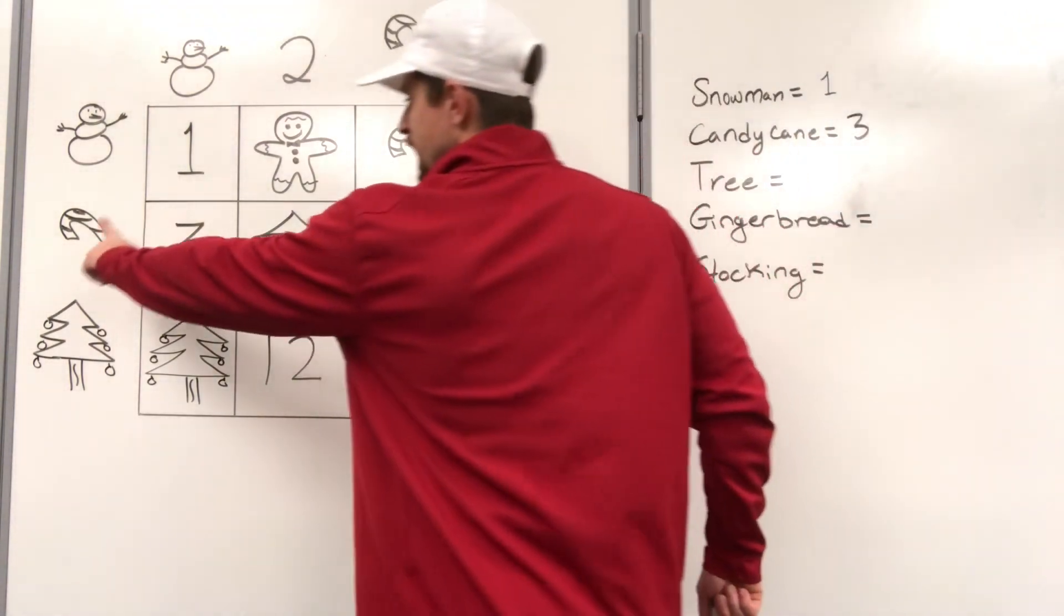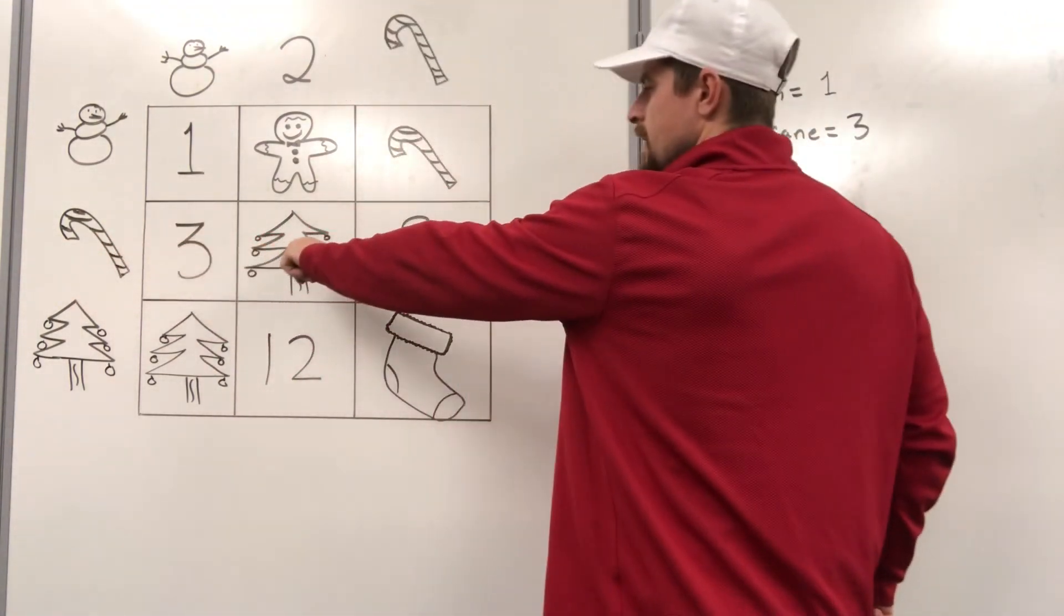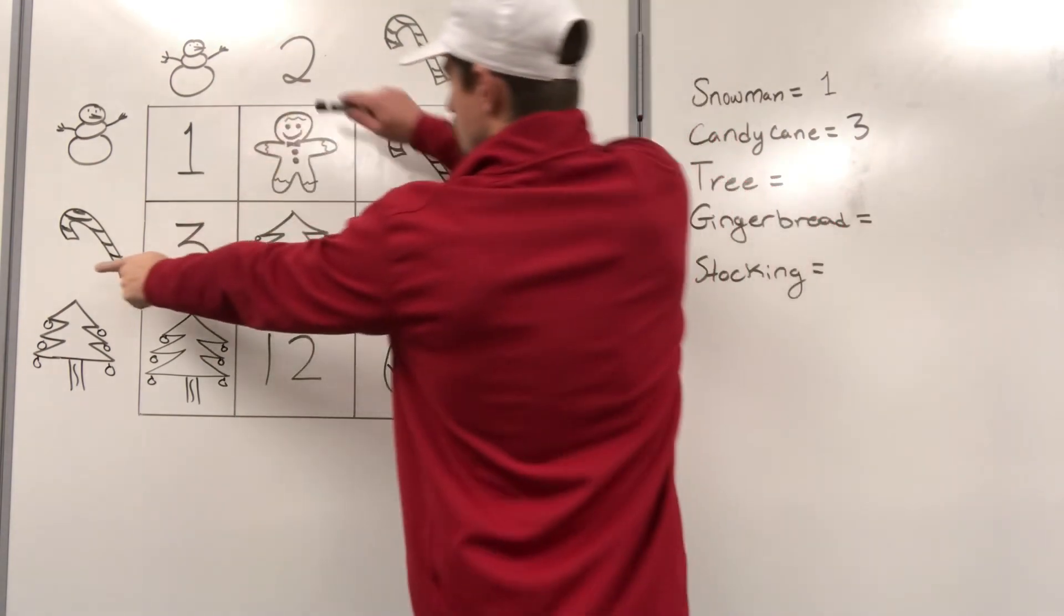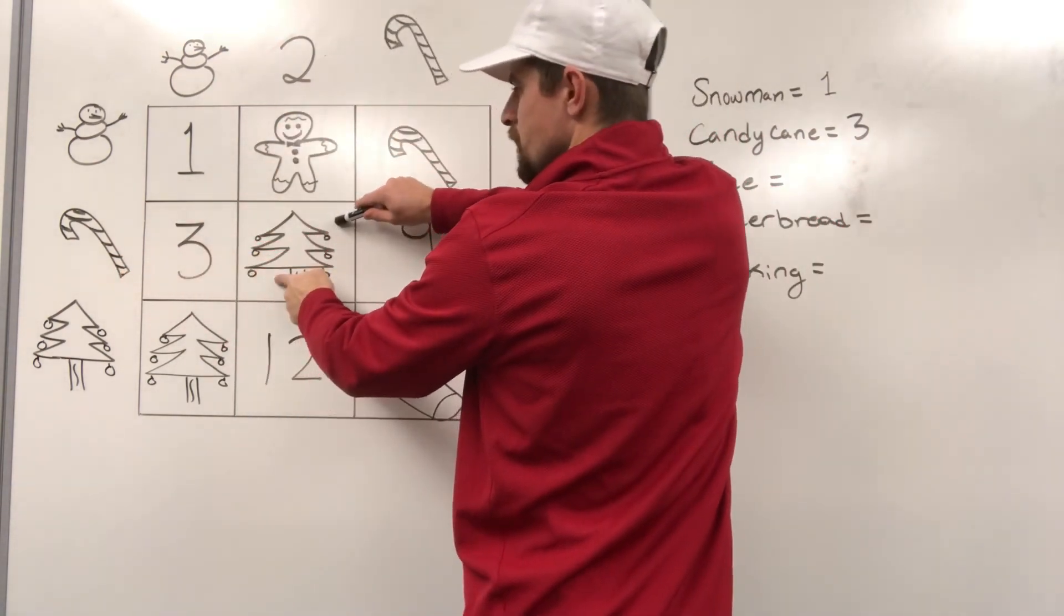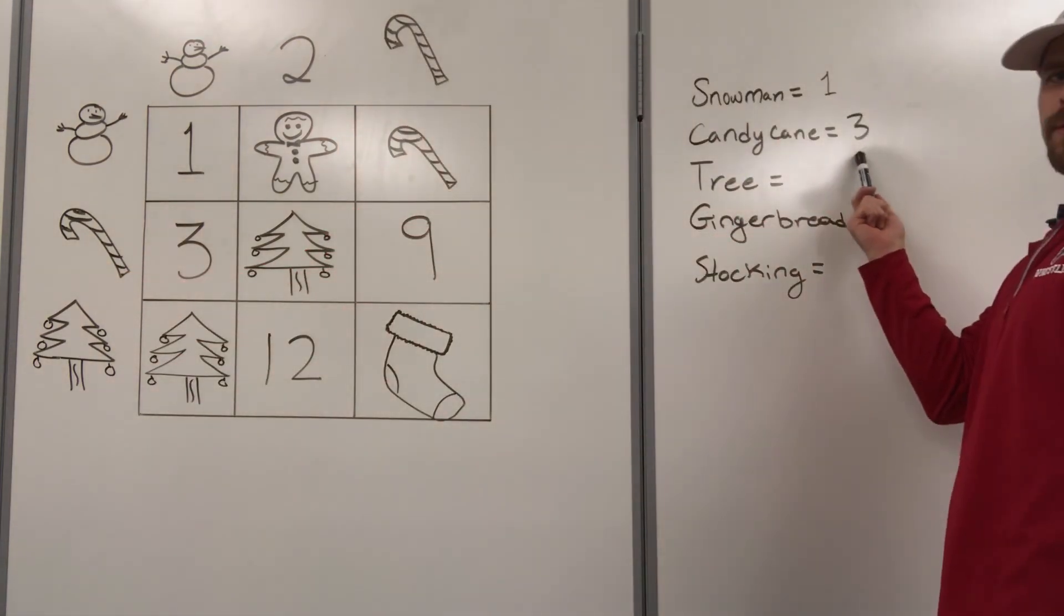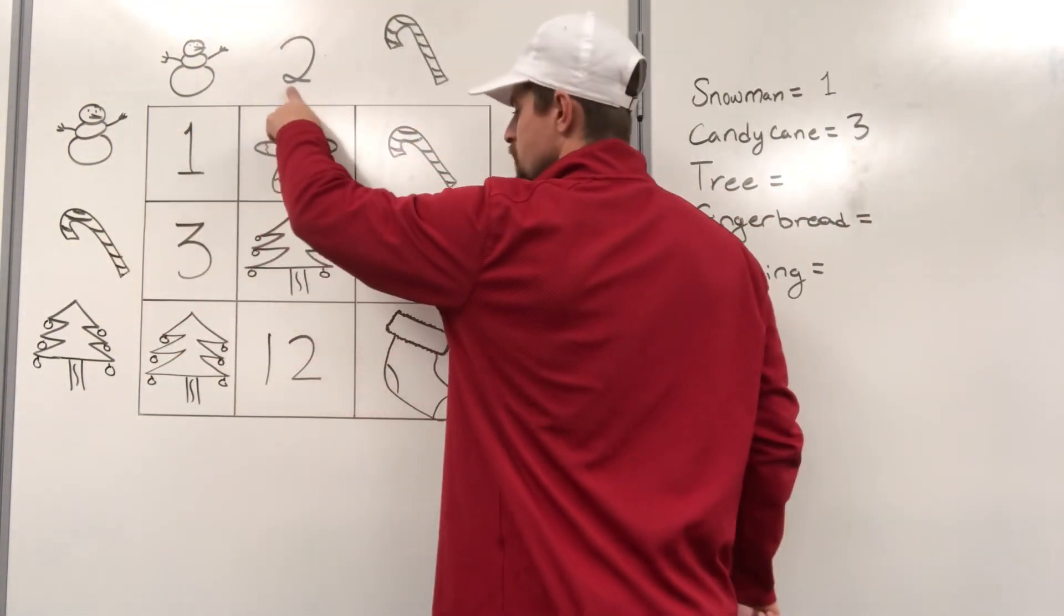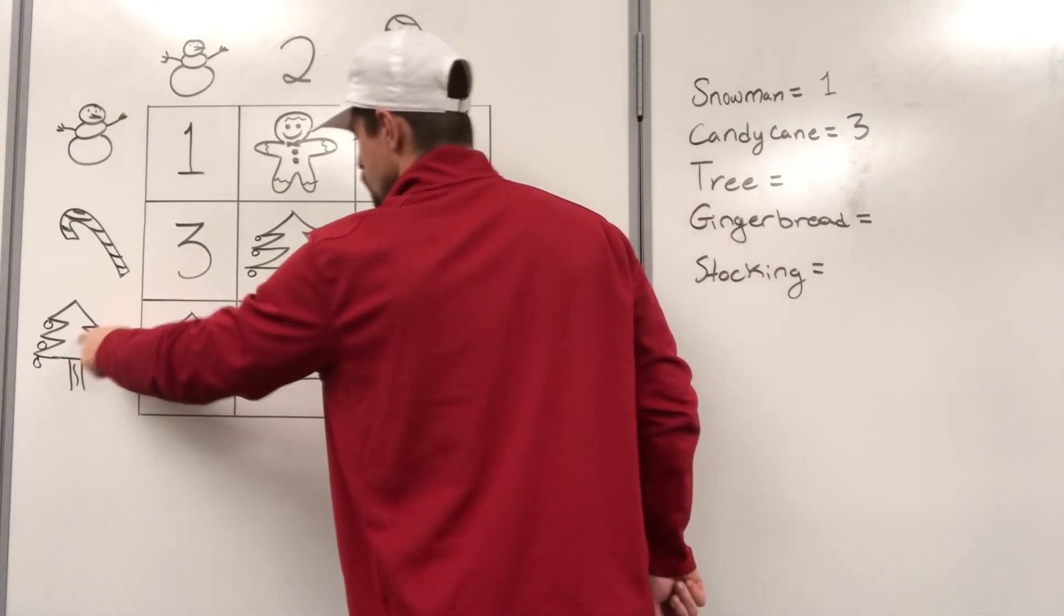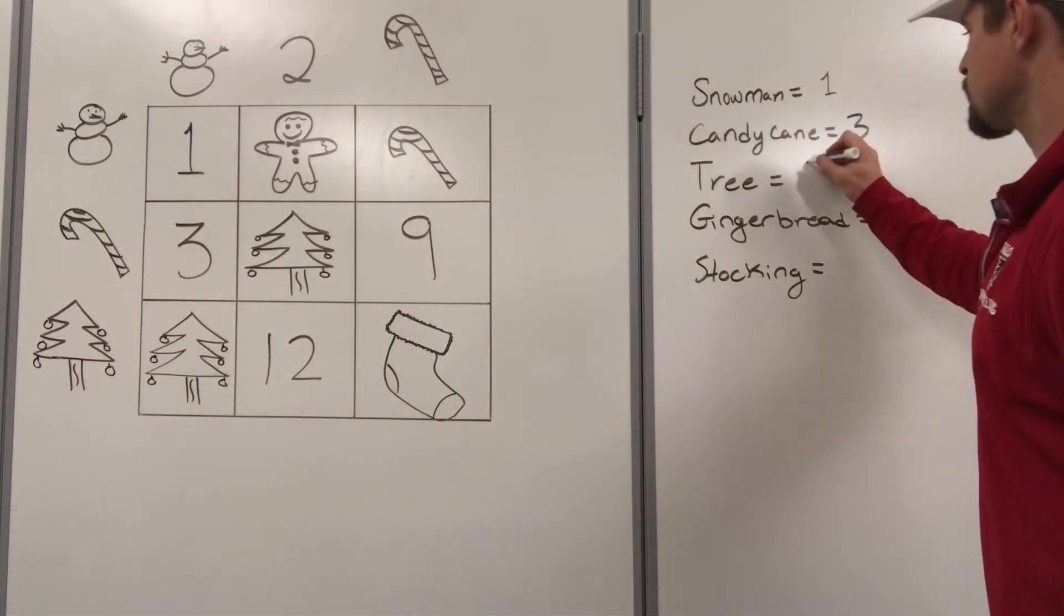But we do know that a candy cane times a two makes a Christmas tree. And we already know what a candy cane's worth. Three. So if that candy cane's worth three times two, that must mean that Christmas trees are worth six.